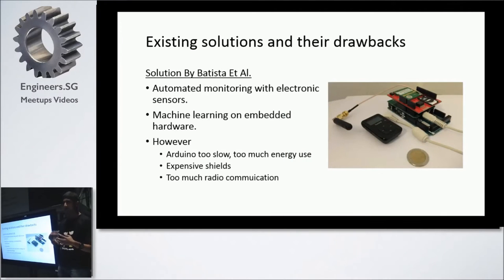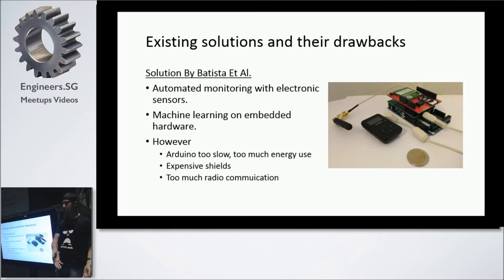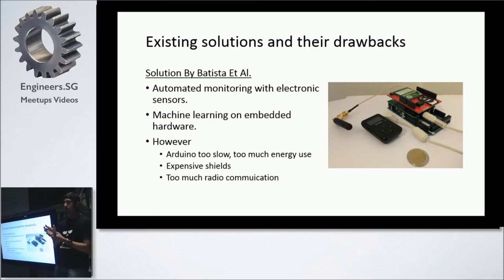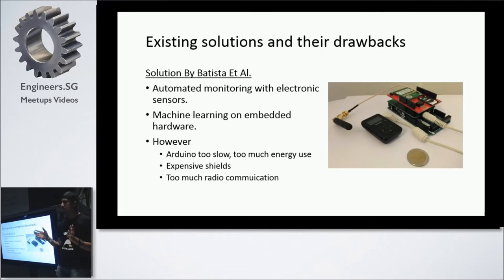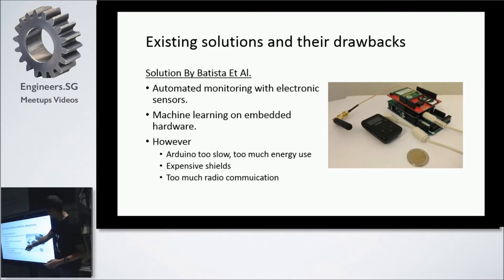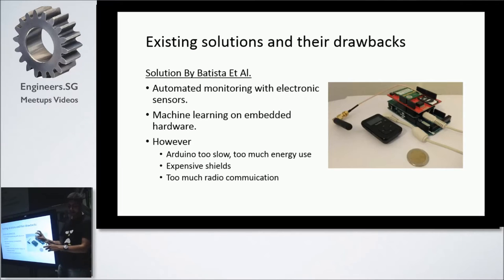There are some electronic solutions that use machine learning, but they don't quite get there. One was developed by an Italian scientist called Batista. He developed an algorithm using three steps we also use: capture the wingbeat sound of the mosquito, run FFT to extract the fundamental frequency, then run a Bayesian classifier to predict the species. The machine learning model was trained with about a thousand mosquito sounds per species. The problem is he used an Arduino with a bunch of shields — consuming a lot of power, expensive, not modular, and can't run on battery. Arduino is also slow, taking milliseconds or more to process one output.